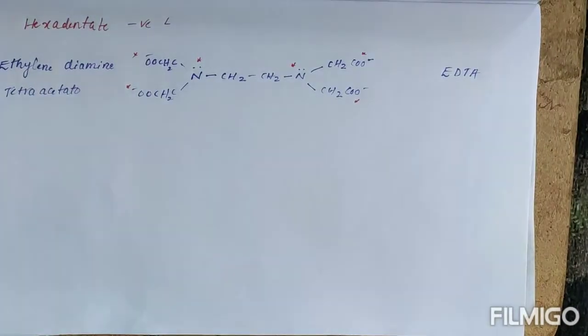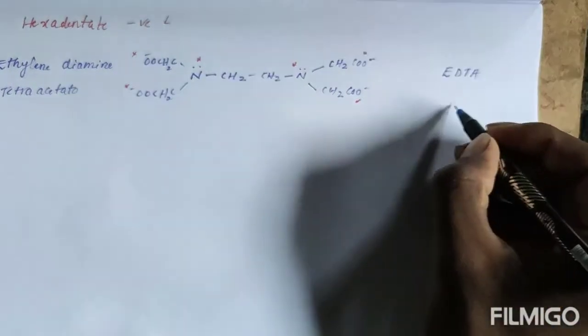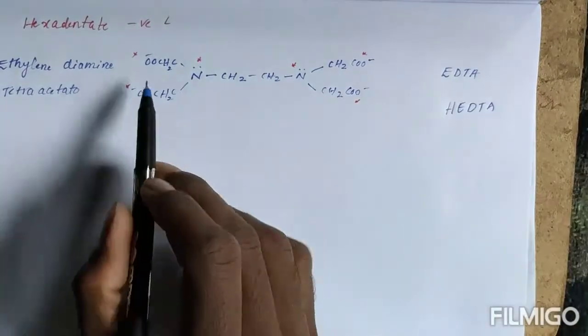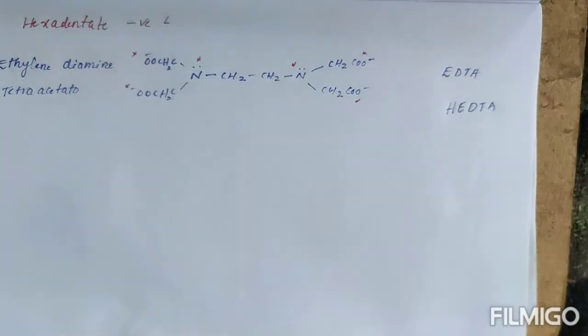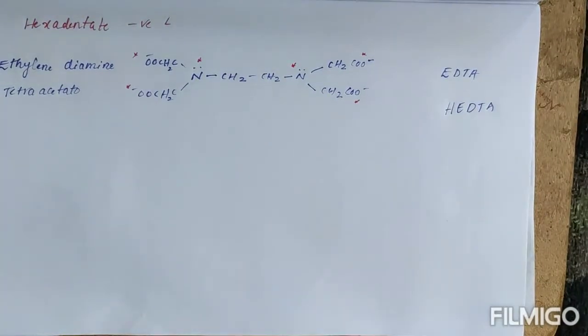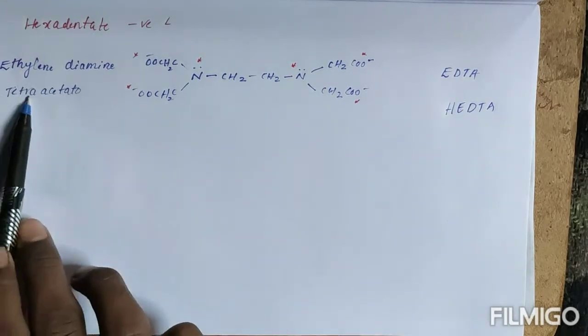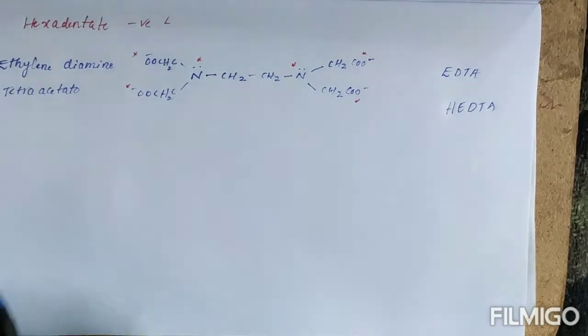Ethylenediamine tetraacetato. We have seen HEDTA, right, H-E-D-T-A. If we have H here, that should be H-E-D-T-A, but we have acetate group, that's why it is ethylenediamine tetraacetato. Hexadentate negative ligands.